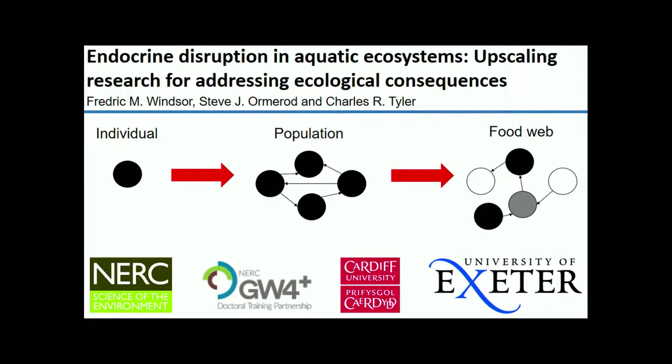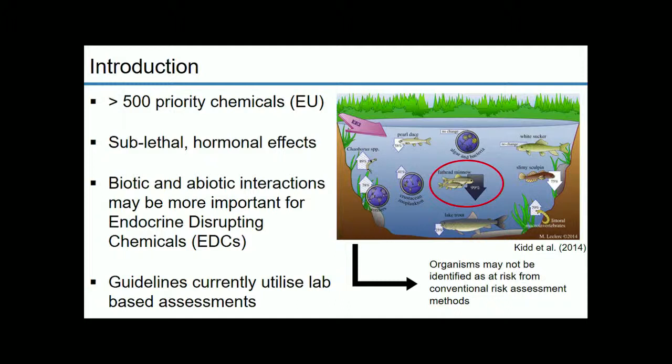For those of you who don't know, I'll provide a basic introduction. Endocrine-disrupting chemicals are responsible for artificially disrupting endocrine function within aquatic organisms in fresh waters and marine waters. These generally operate through hormonal pathways and have sublethal effects at environmentally relevant concentrations. It's this sublethal aspect that means biotic and abiotic interactions within natural systems can have quite a significant effect in determining the ecological risk.